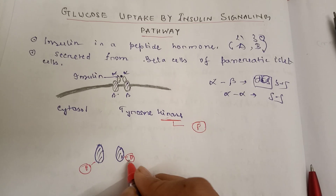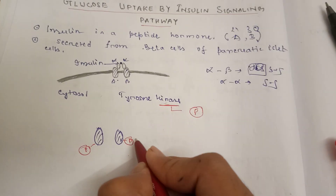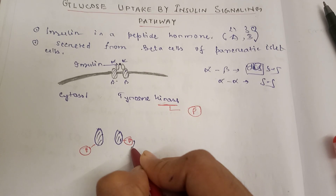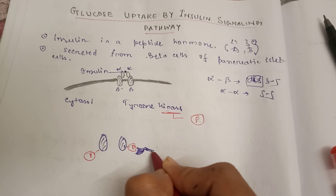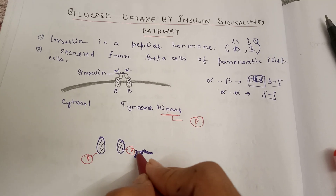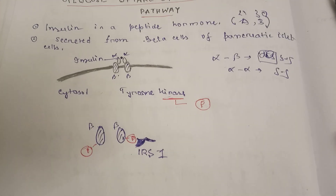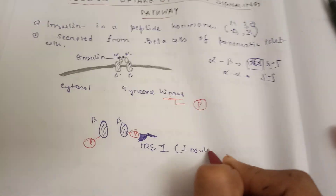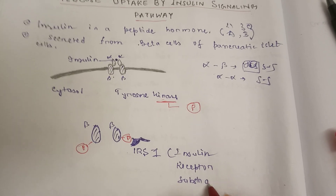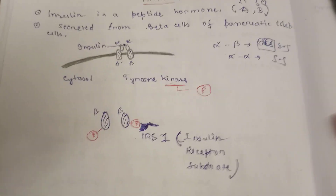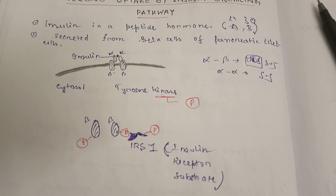The beta subunit is now phosphorylated. Another molecule will bind to this phosphorylated part of the beta subunit — this is called IRS-1, which stands for Insulin Receptor Substrate 1. Due to binding to the phosphorylated and kinase part of the beta subunit, IRS-1 will also get phosphorylated.